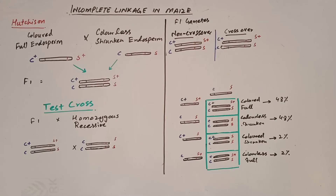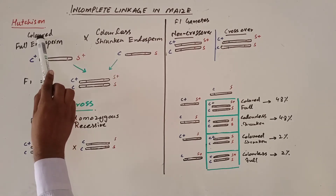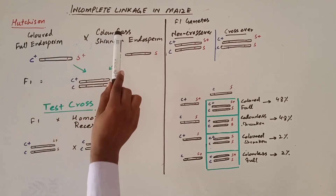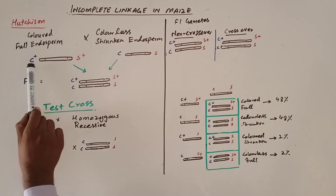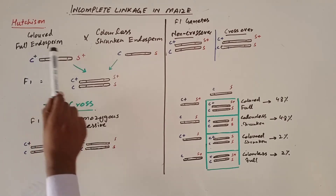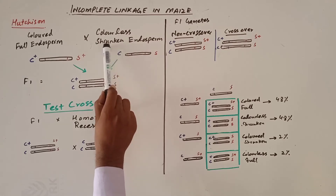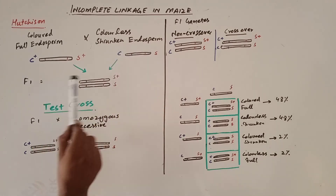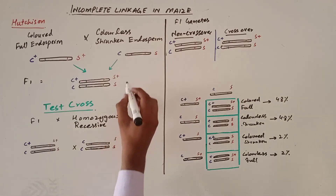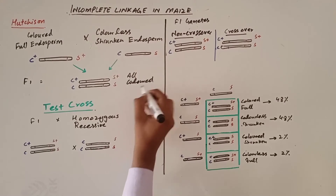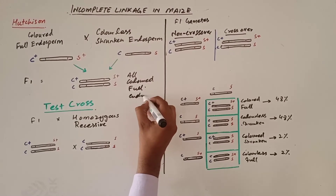The second example of incomplete linkage is in maize (Zea mays). A case of incomplete linkage between alleles for color and shape of the seed was observed by Hutchison. When a maize plant with colored and full endosperm is crossed with colorless and shrunken endosperm — colored (C+) and full endosperm (S+) are dominant; colorless (C) and shrunken endosperm (S) are recessive — the F1 shows all colored and full endosperm.